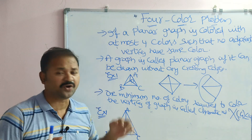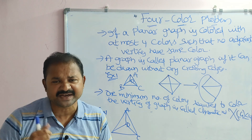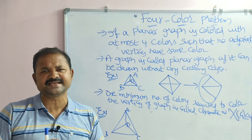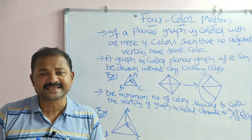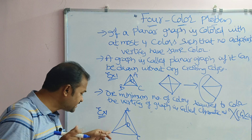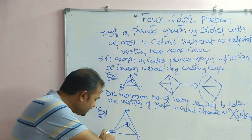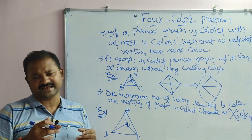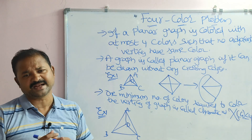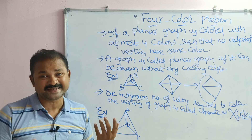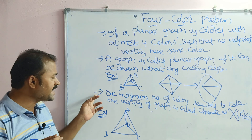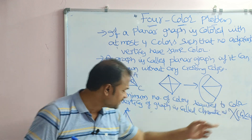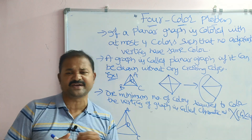The condition is: two adjacent vertices cannot have the same color. If this vertex is colored with red, then we can't color its adjacent vertices with red — we must use some other color. We also know about the chromatic number, which means the minimum number of colors required to color the vertices of a graph.